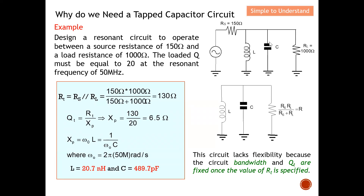From this parallel resonator, you can see that the two resistors are connected in parallel. The first thing I do is combine their effect into one total resistor RT, which is 130 ohms, calculated using the parallel resistor equation. Next, for a parallel resonator, the circuit Q is given by QP = RP / XP. With QP equal to 20 and RT equal to 130 ohms, the only unknown is XP, which I can find as 6.5 ohms.